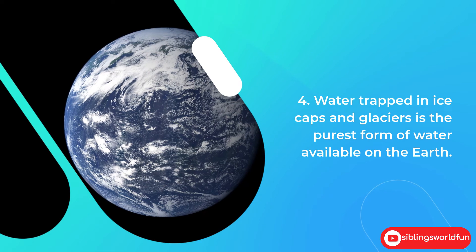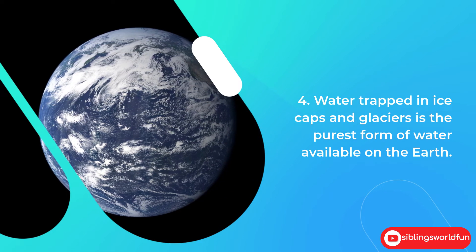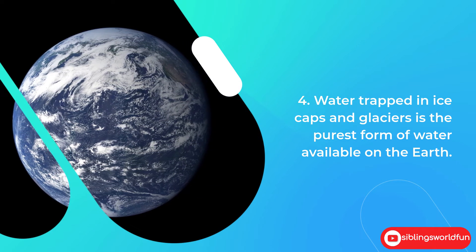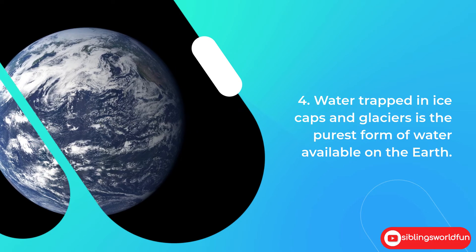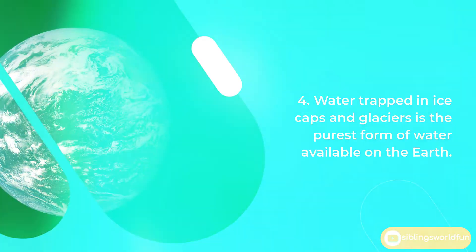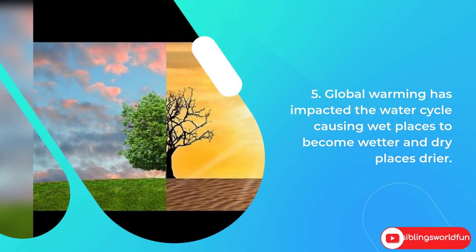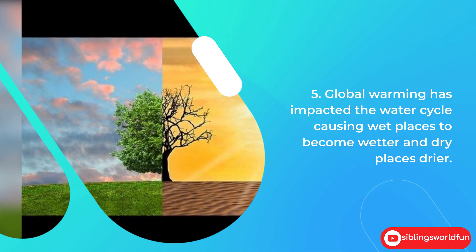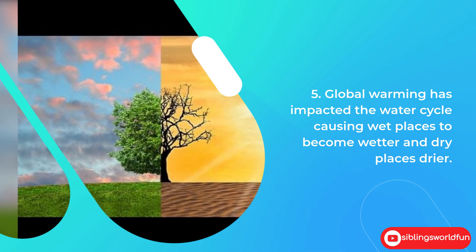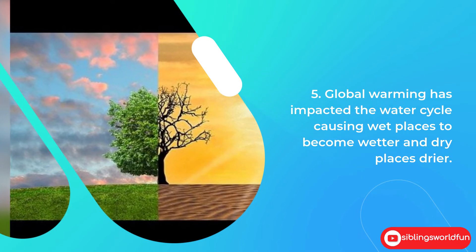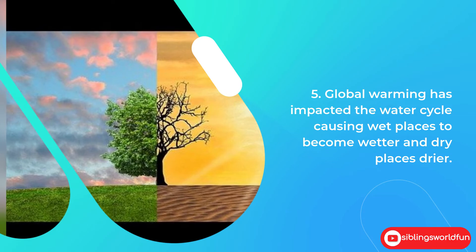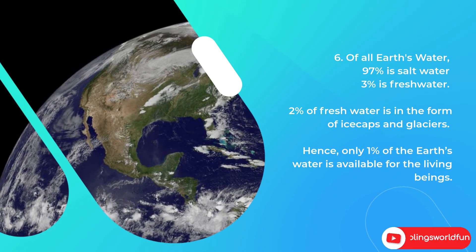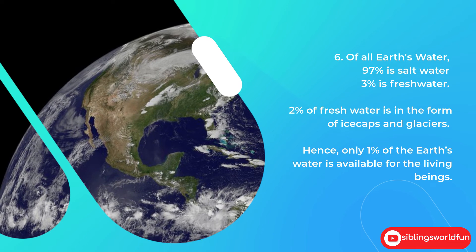Number four: water trapped in ice caps and glaciers is the purest form of water available on the earth. Number five: global warming has impacted the water cycle, causing wet places to become wetter and dry places drier.